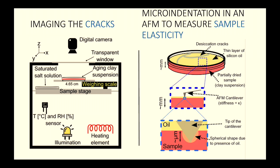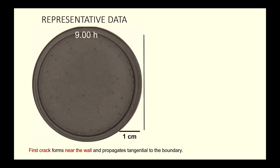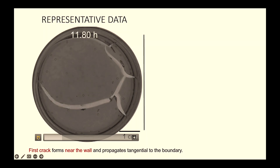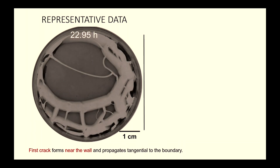In the AFM experiment, a thin oil layer is placed on the sample to avoid breaking the cantilever due to high capillary attractions. A pyramidal silicon tip performs micro-indentation in contact mode; force versus indentation depth curves are measured for different clay concentrations, ages, and salt concentrations. A 24-hour drying video shows the sample initially shrinking from the edges, then tangential and radial cracks propagating.